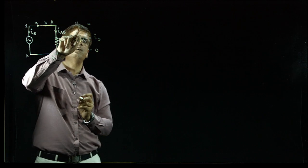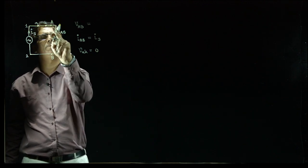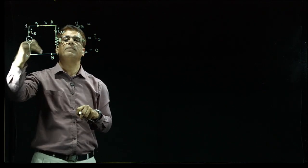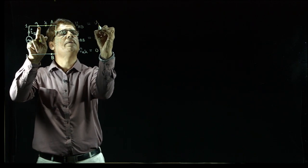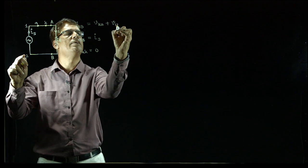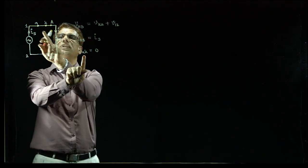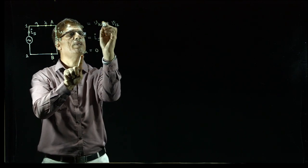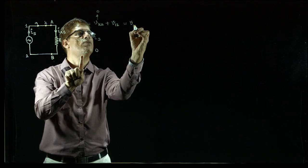Now considering an open circuit with A and K disconnected, with the same R load between A and B. Since it is an open circuit, I_S equals 0, so I_AB is also 0. V_AB equals I_AB into R, and since I_AB is 0, V_AB is 0. Going anticlockwise: V_12 plus V_BA equals V_AK. Since V_AB is 0, V_BA is also 0, so V_AK equals V_12.